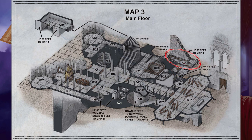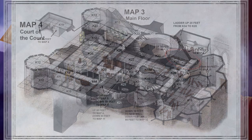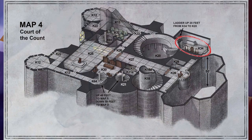Area K24 — The Servants' Quarters: Broken furniture and torn cloth are strewn about this 20-by-40-foot room. Dim light comes from a pair of dirt-caked windows in the northeast corner. A narrow staircase with no railing ascends along the north path, leading to Area K34.